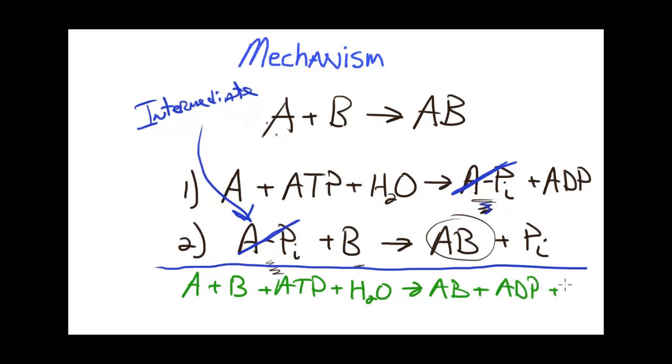This now is overall favored and the mechanism to facilitate the favorable production of AB is as described. So the coupling of the reactions provides a new mechanism or new pathway for AB to react that is thermodynamically favored.